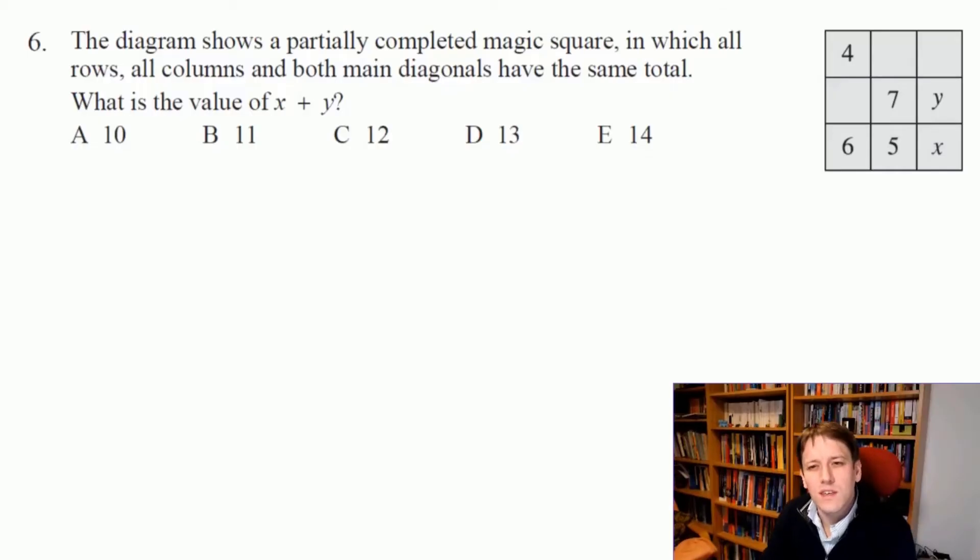One thing you notice here that might be helpful is that 4 plus 7 is 11 and 6 plus 5 is 11, and whatever you make x here, it doesn't really matter in terms of making this diagonal and this row add up to the same total. It doesn't actually help us get x plus y here, but that idea we can apply to the square in the top right corner.